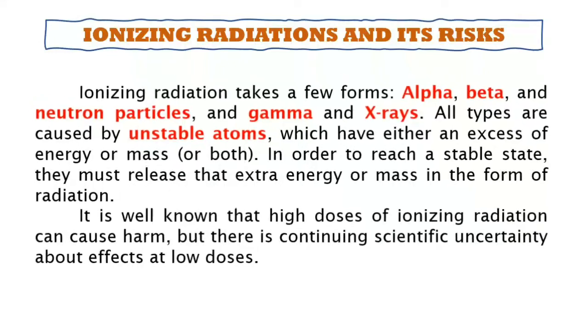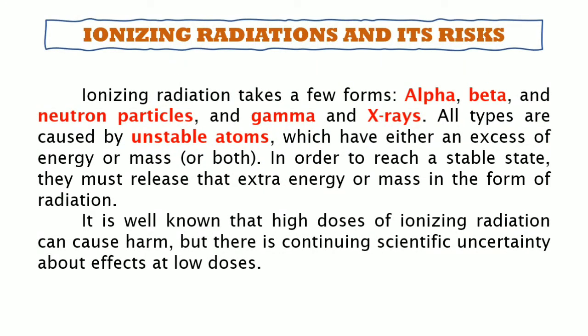Ionizing radiation takes a few forms: the alpha, beta, and neutron particles, and gamma and X-rays. All types are caused by unstable atoms which have either an excess of energy or mass, or both. In order to reach a stable state, they must release that extra energy or mass in the form of radiation. It is well known that high doses of ionizing radiation can cause harm, but there is continuing scientific uncertainty about effects at low doses.